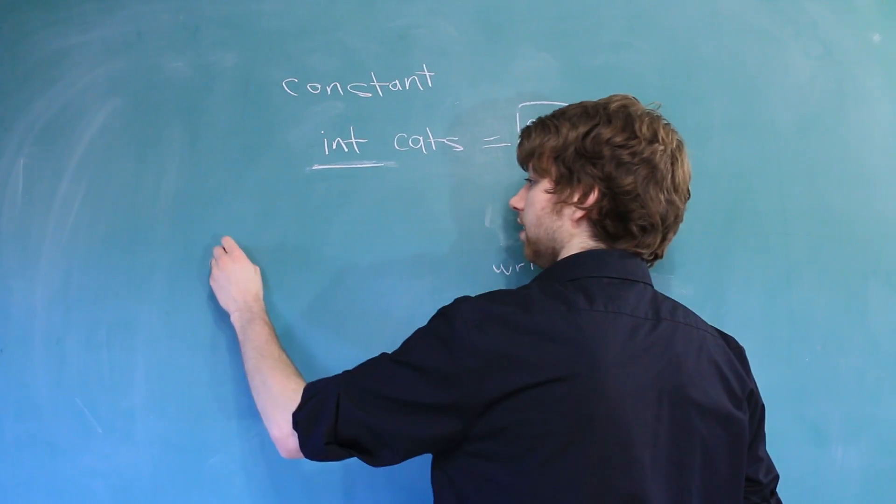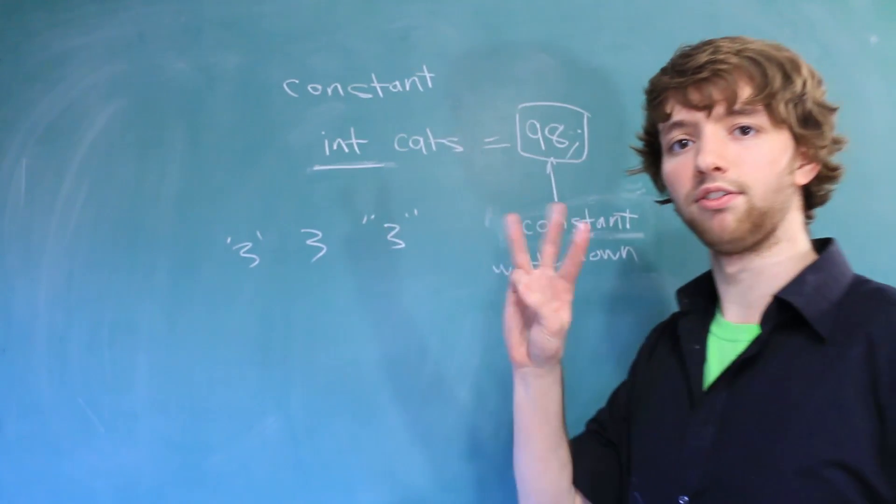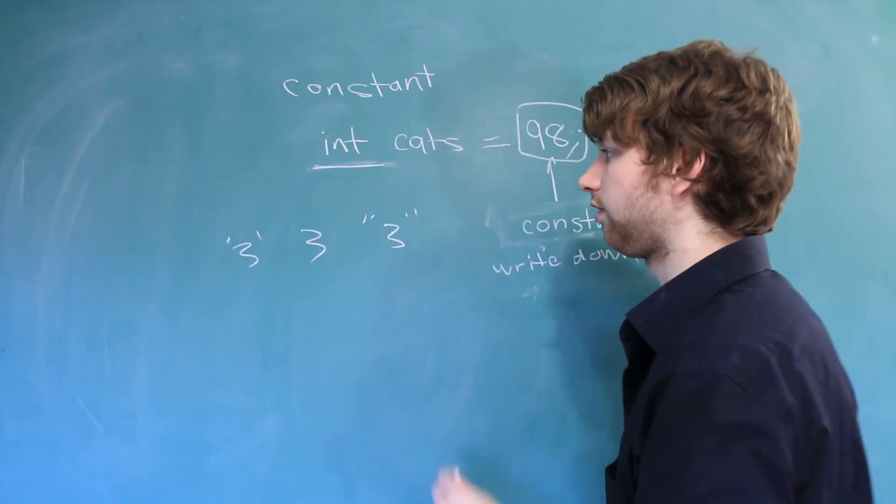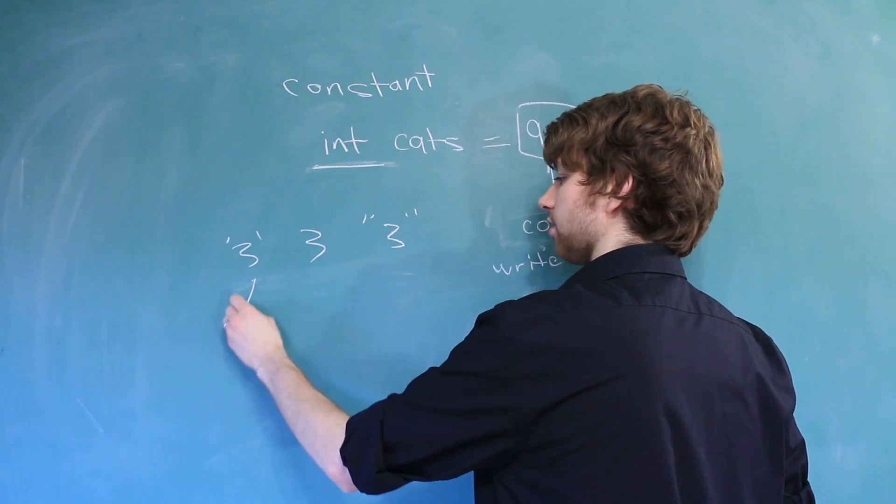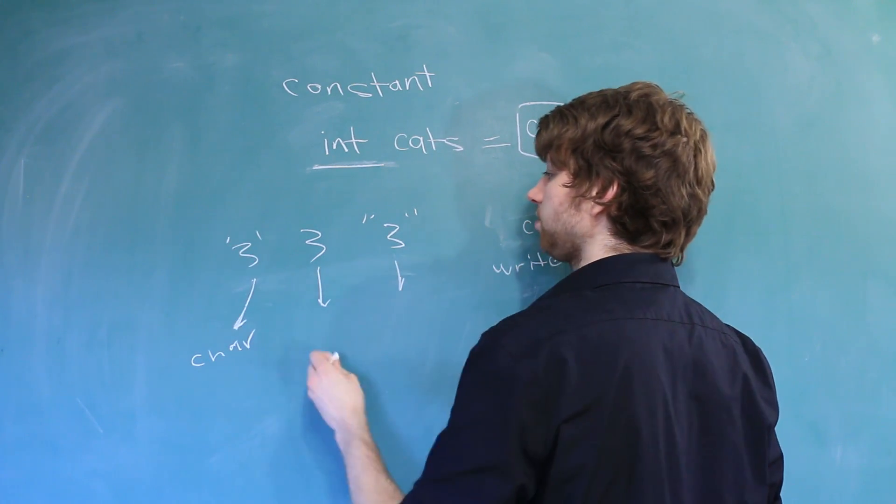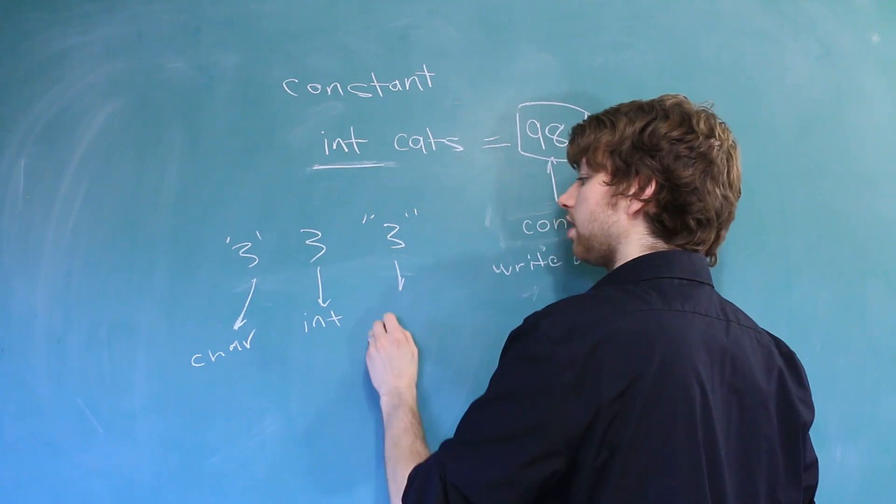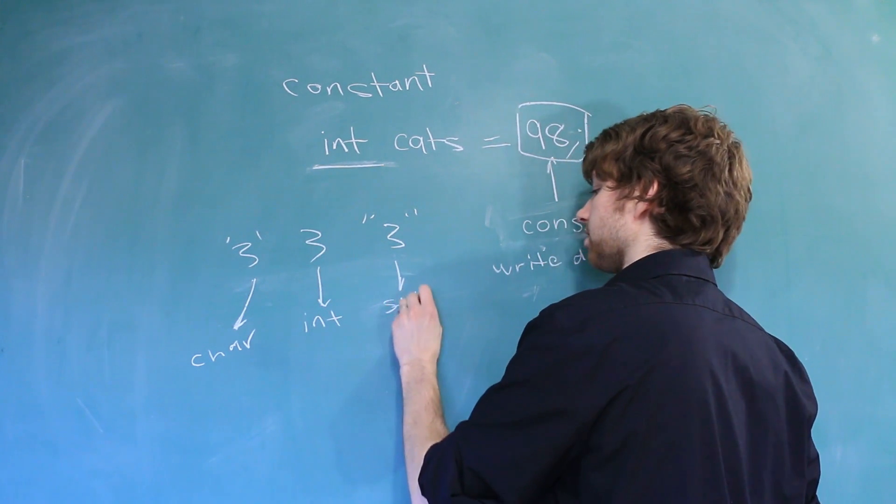For example, you could have this, you could have this, and you could have this. These are three different types of constants that are all very similar. But the data type for these are all different. The first is a character because of the single quotes. The next is an integer because there's no quotes. And then the third is a string because of the double quotes.